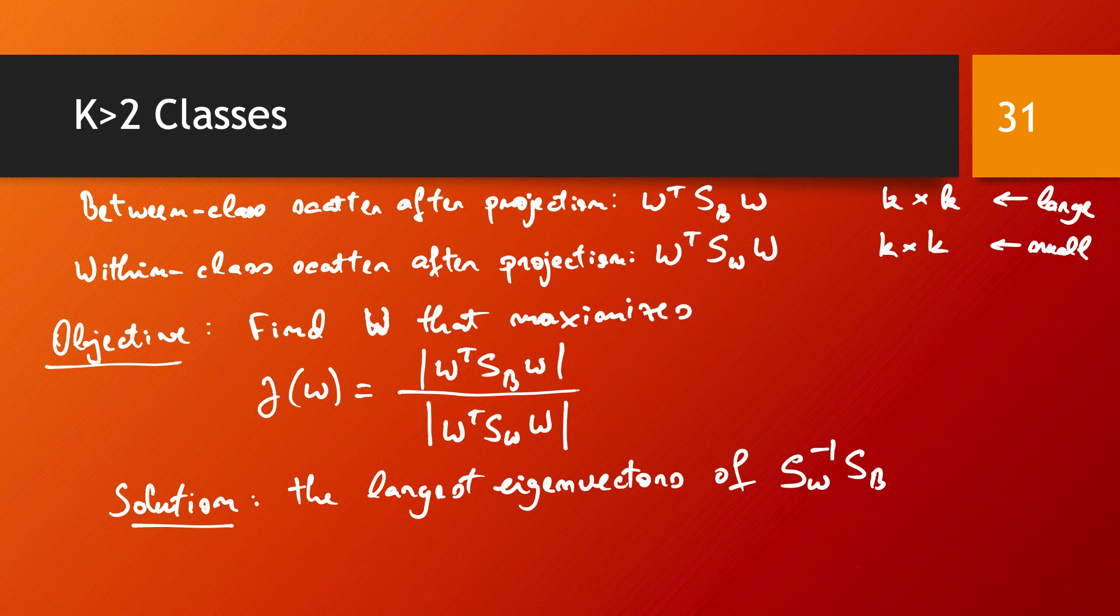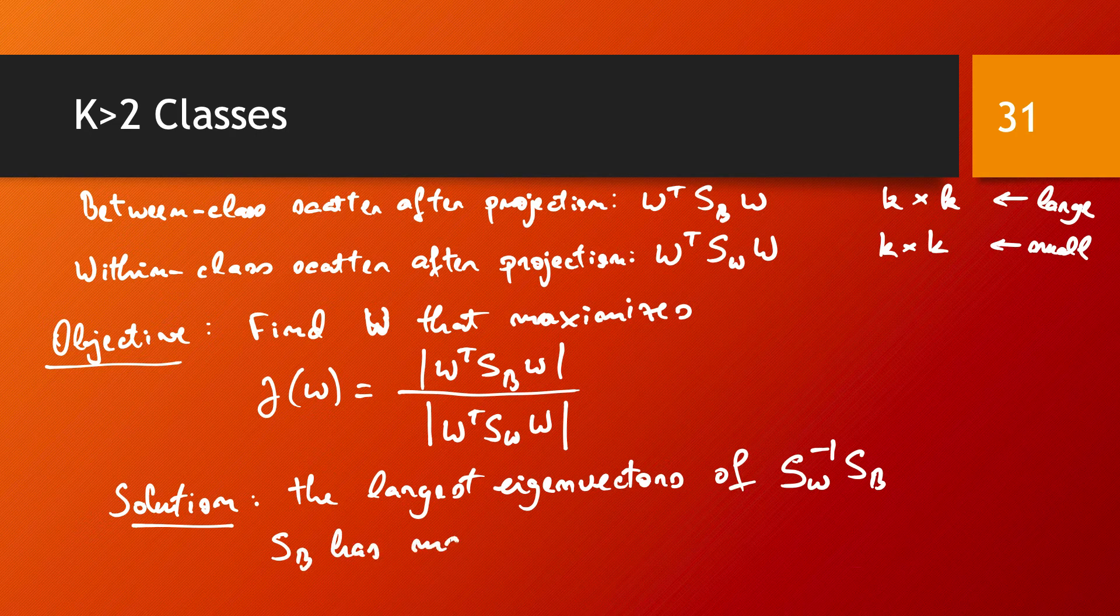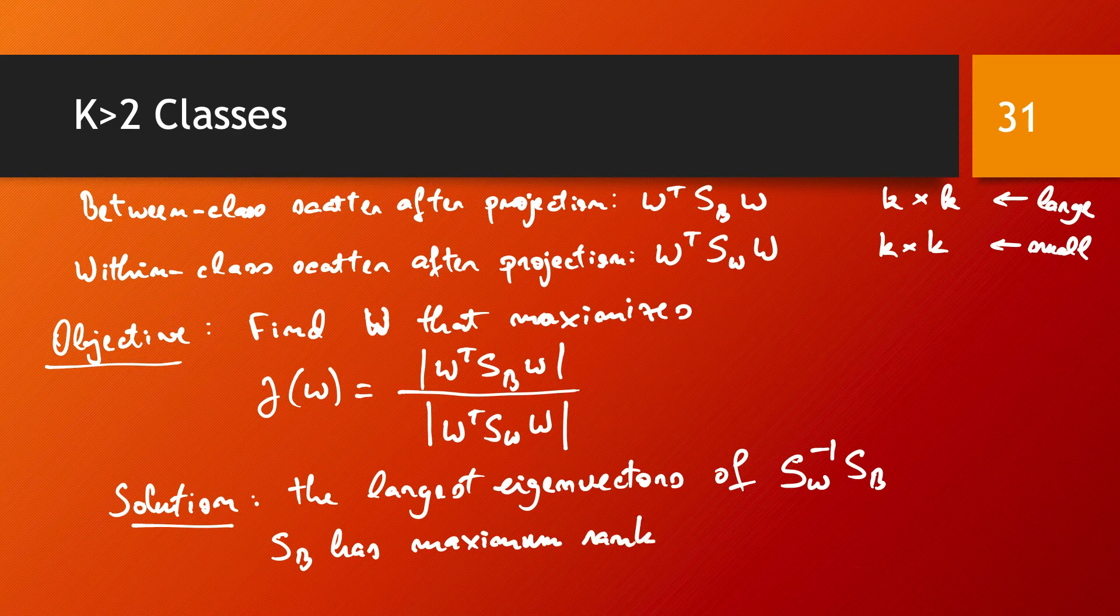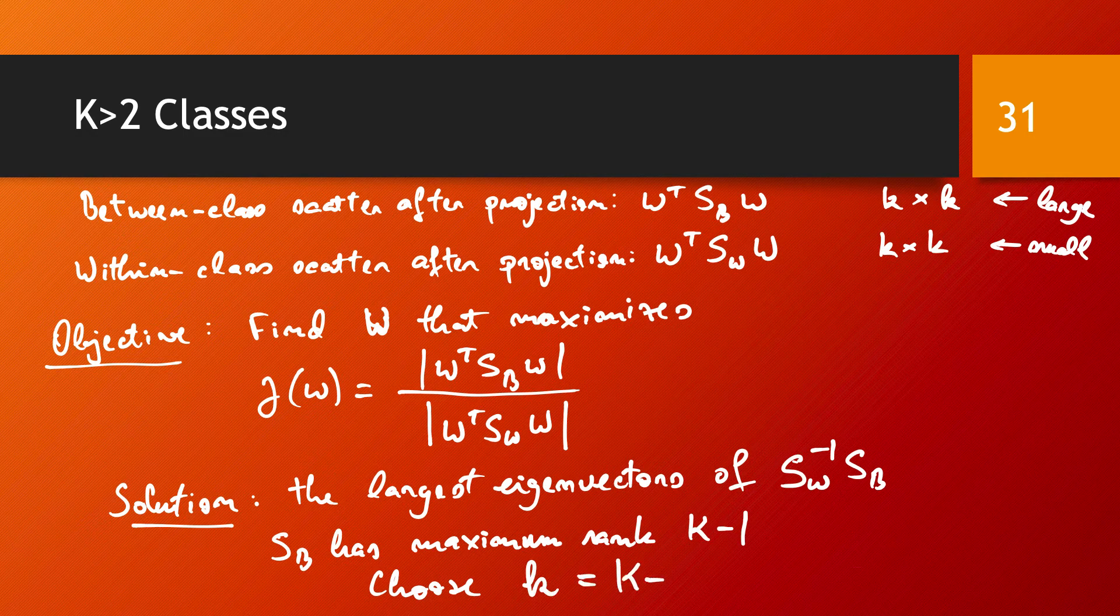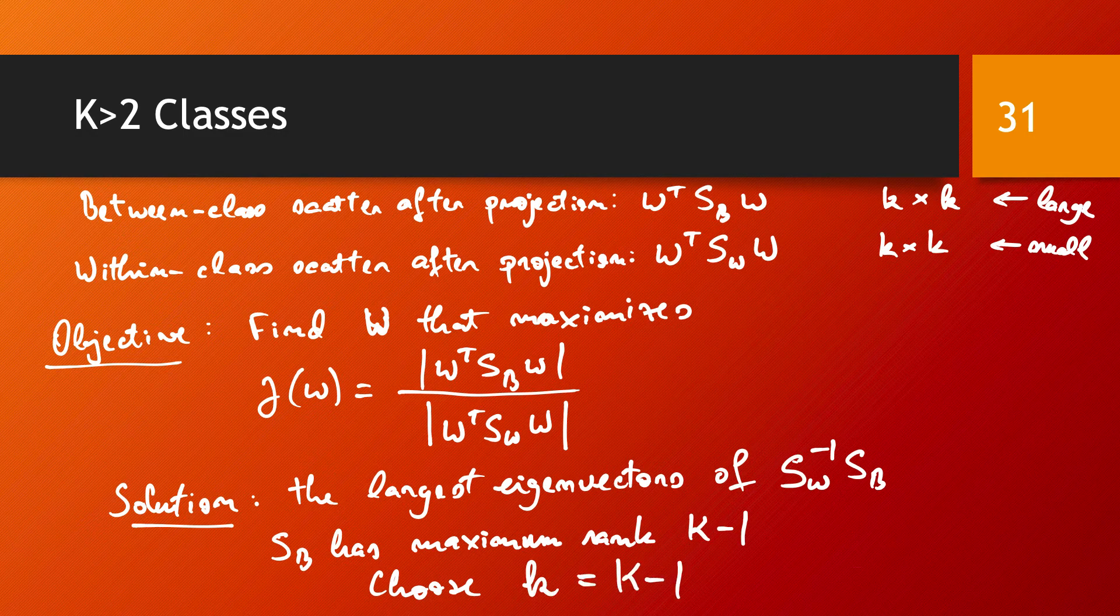And only K minus one of them are independent. And so S_B has maximum rank K minus one. And we will choose this small k to be exactly K minus one. And so in this way we are going to define a new lower K minus one dimensional space where this discriminant is then to be constructed.